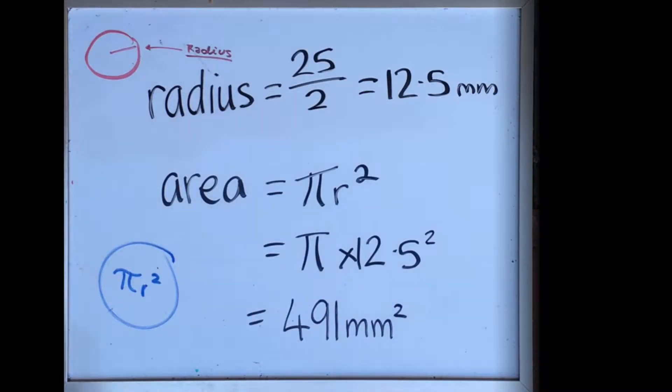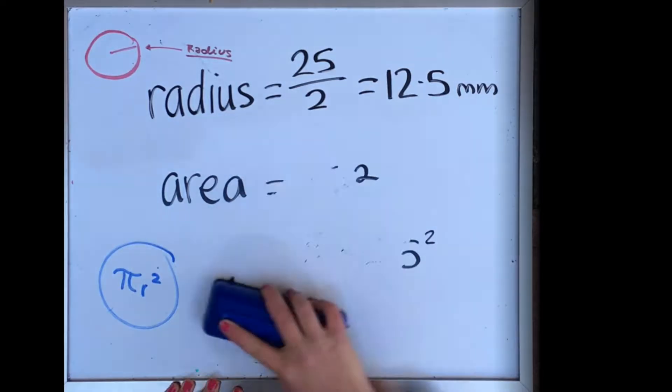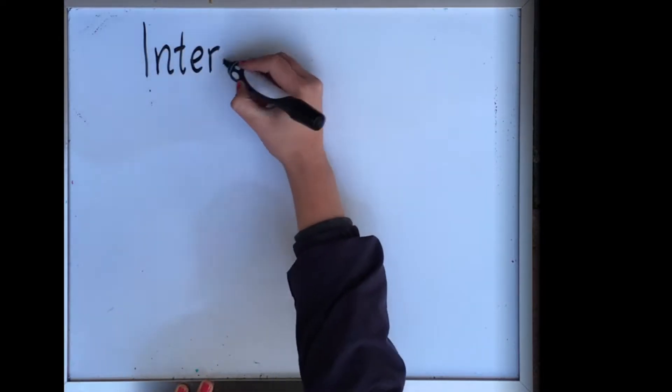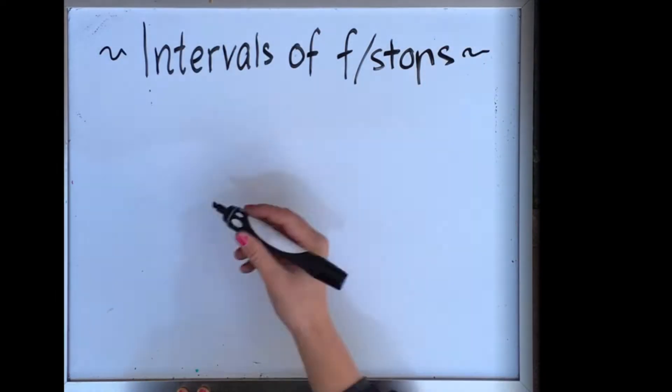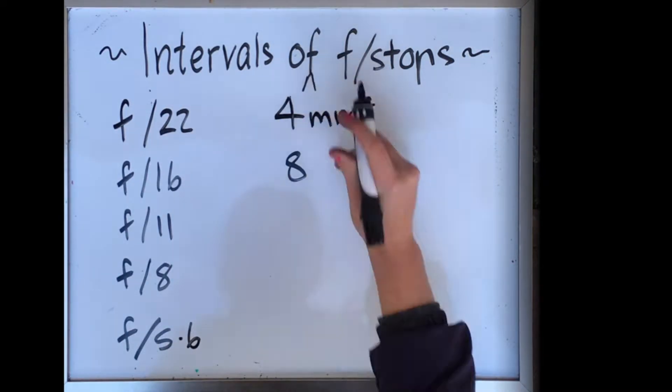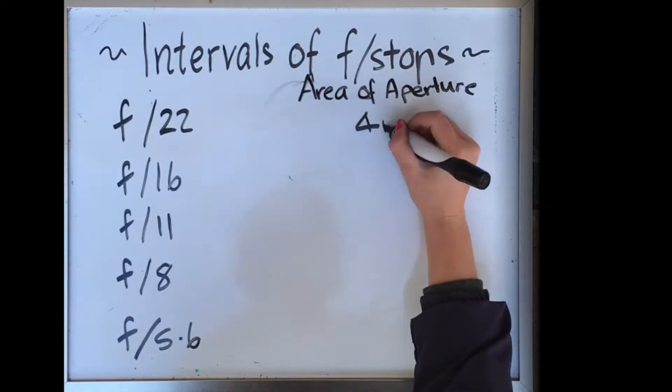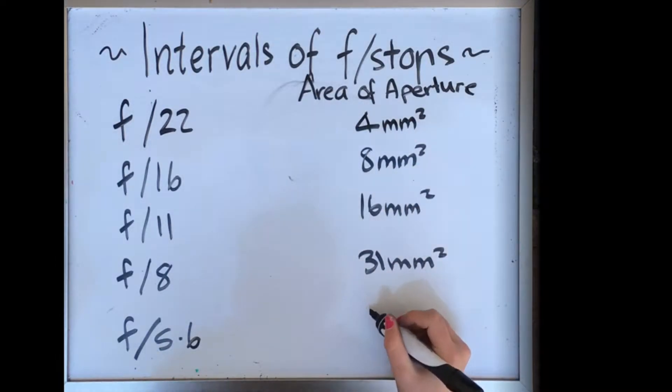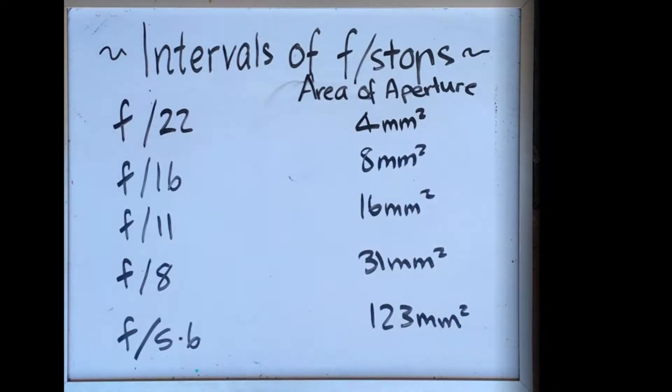For example, on a Nikon FE the smallest f-stop is f1, and the largest is f22. The area of the iris is 1963 millimetres squared for f1, using a 50 millimetre lens that is, and the area of the f22 is 4 millimetres squared. f1 lets in a lot of light because it has a large iris, and f22 lets in barely any light because the iris is small.